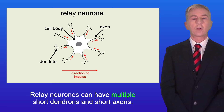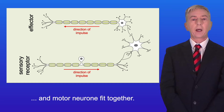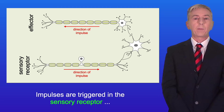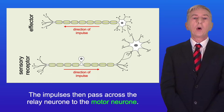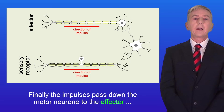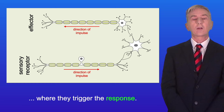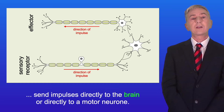Here is how the sensory neuron, relay neuron and motor neuron fit together. Impulses are triggered in the sensory receptor and passed down the sensory neuron to the relay neuron. The impulses then pass across the relay neuron to the motor neuron. Finally the impulses pass down the motor neuron to the effector where they trigger the response. It should be noted that sometimes sensory neurons send impulses directly to the brain or directly to a motor neuron.